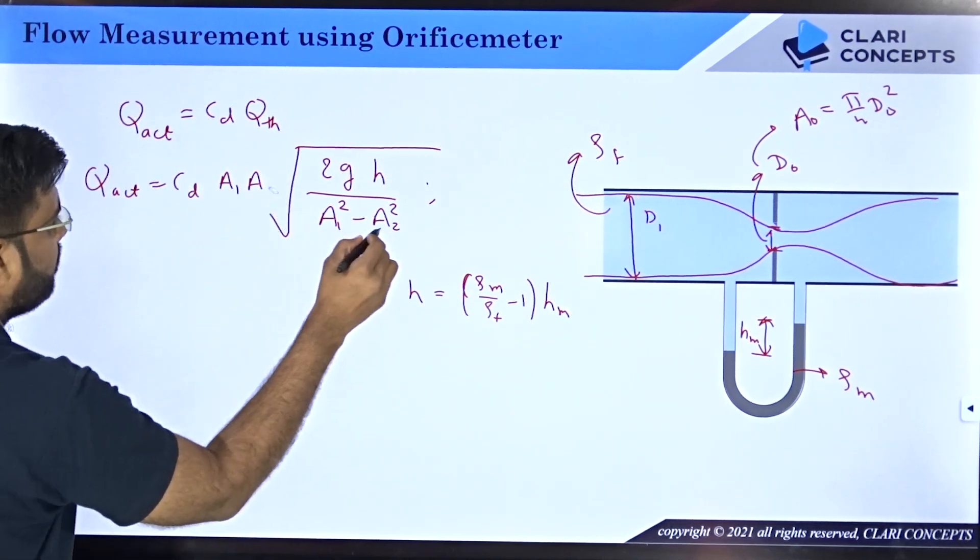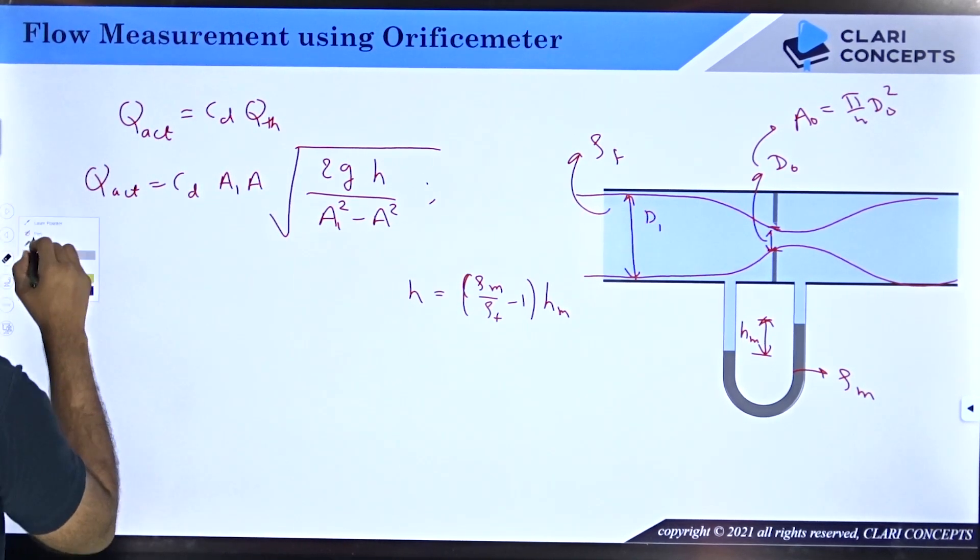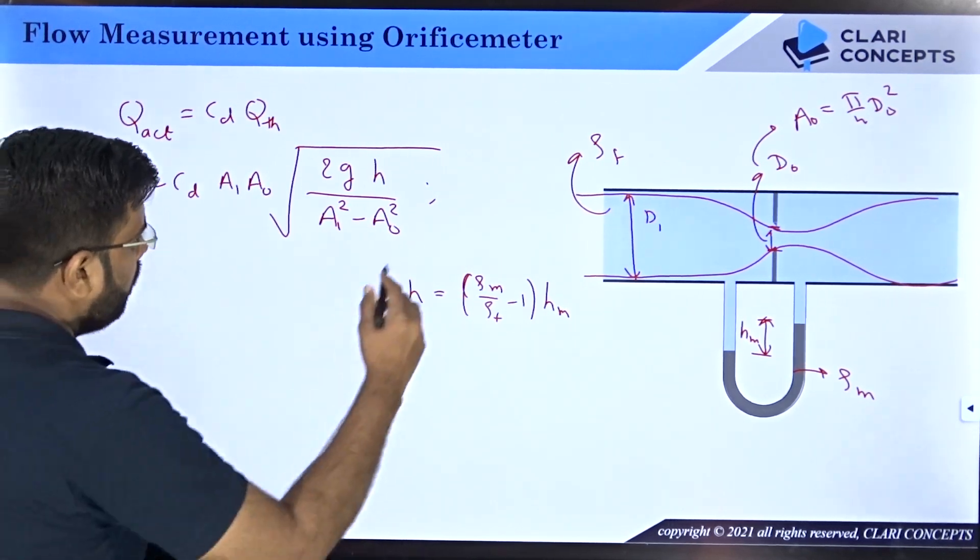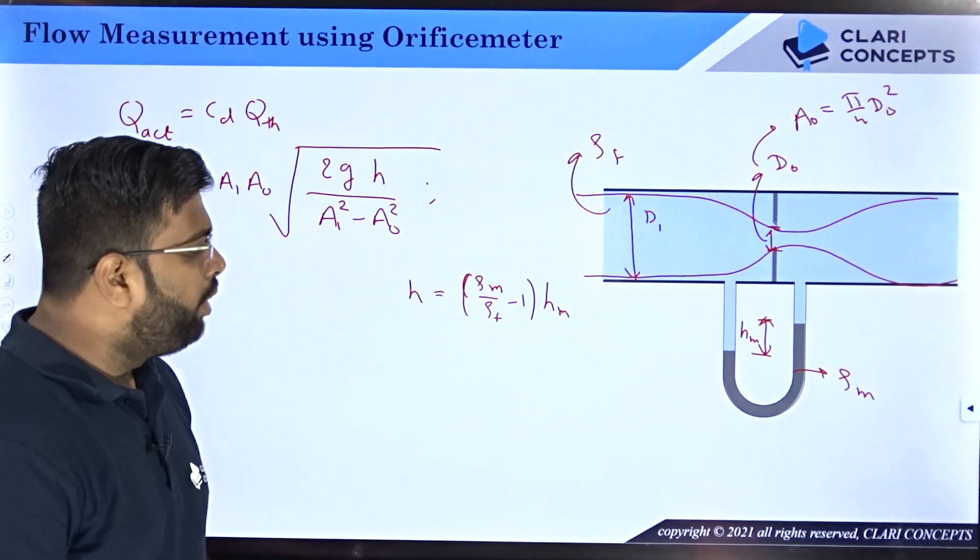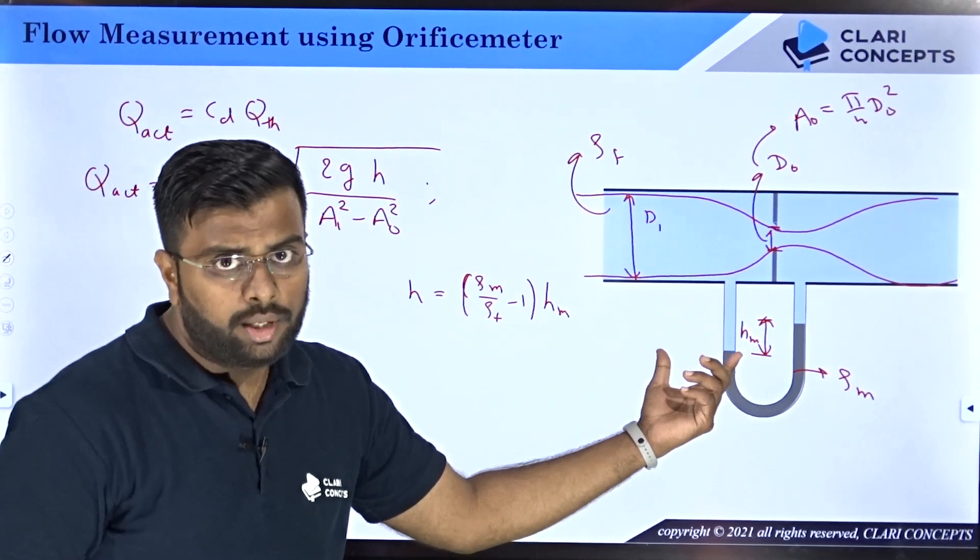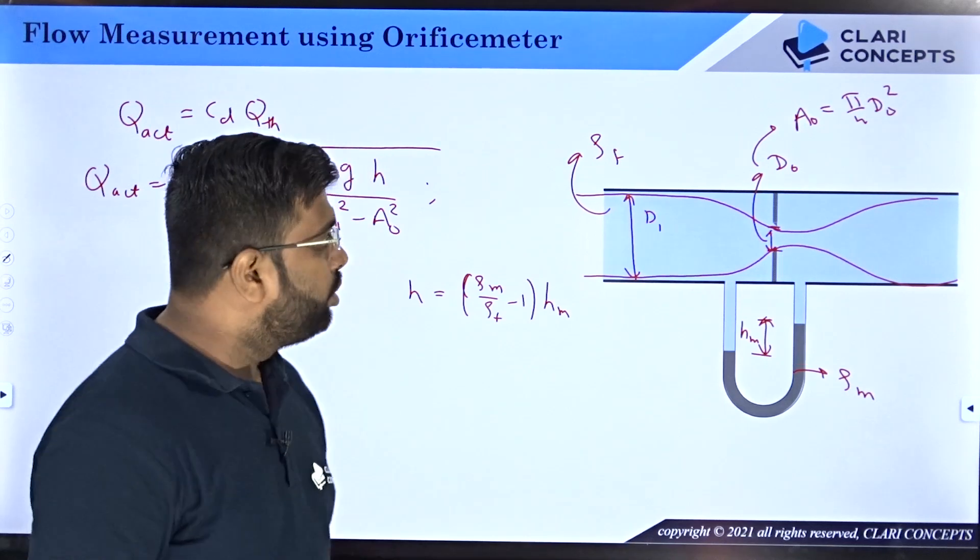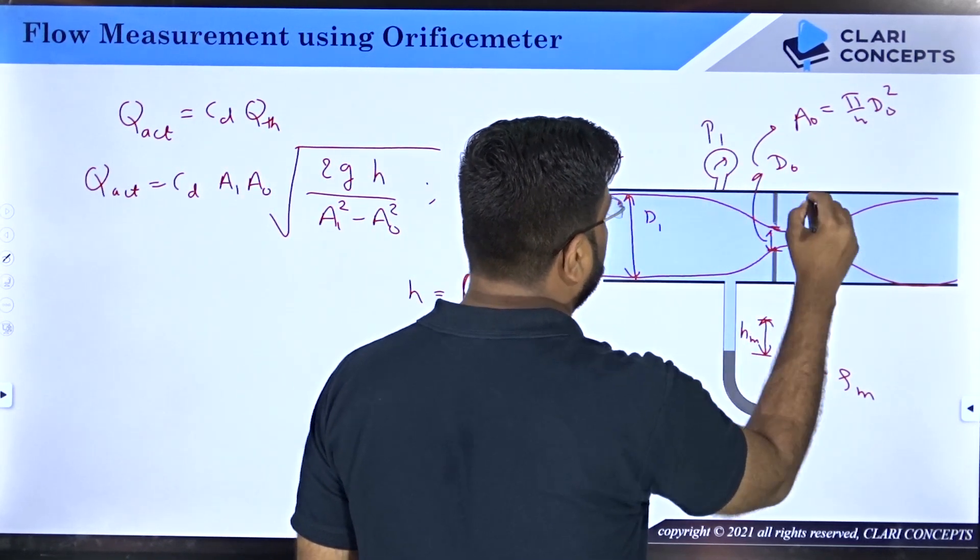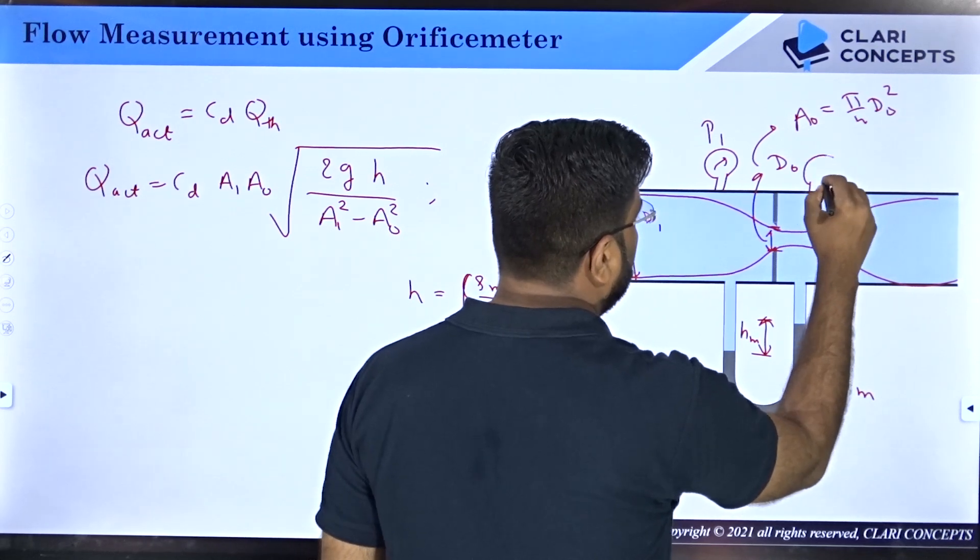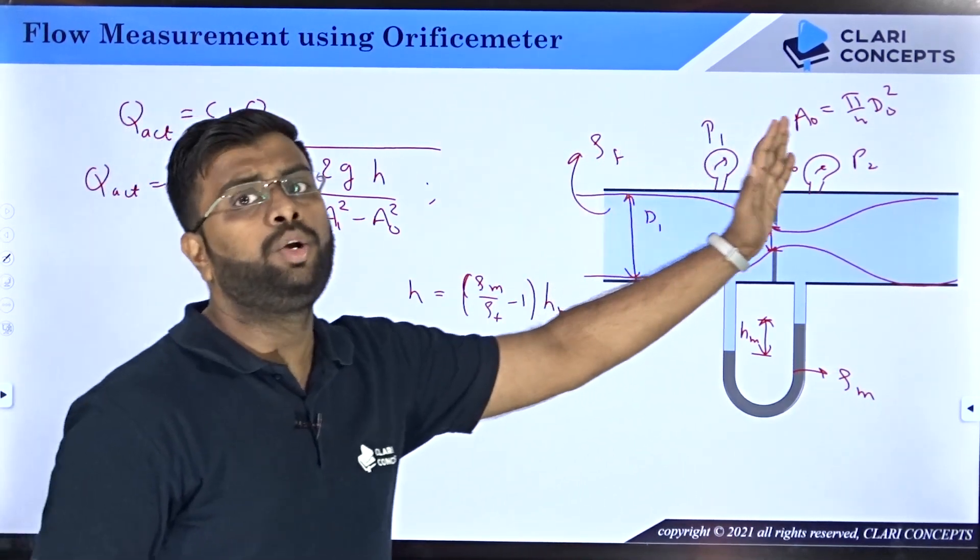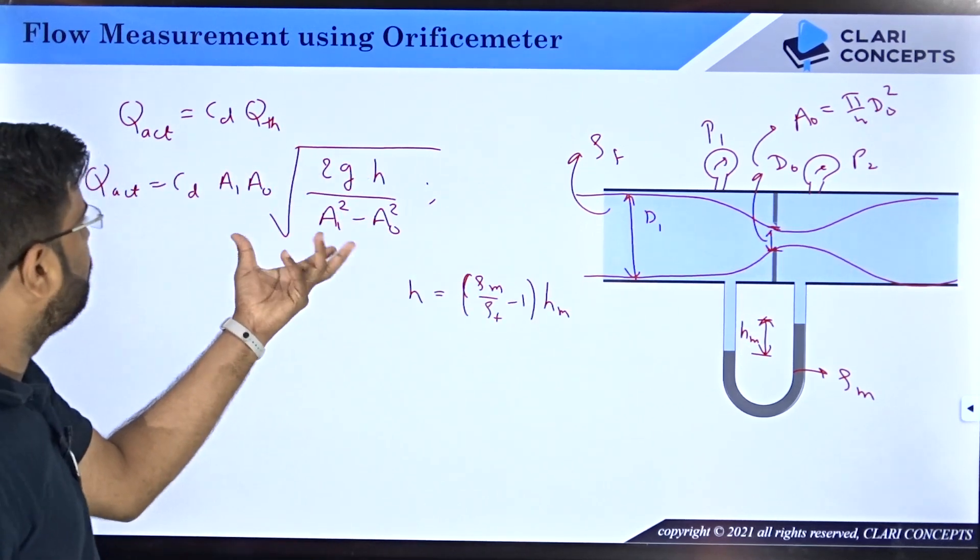Many a times people do not use U-tube manometer to get the pressure difference at upstream and downstream. They deploy devices called pressure gauges. When they deploy p_1 pressure gauge and then p_2 over here, in the numerical itself they will give you pressure p_1 in the upstream, pressure p_2 in the downstream.